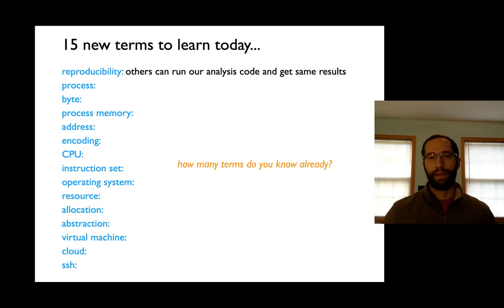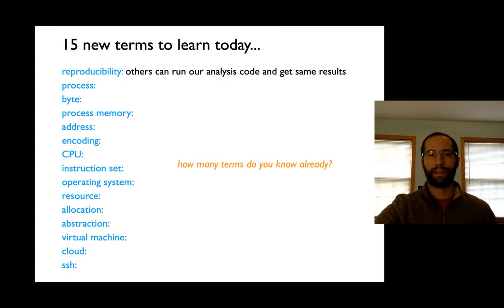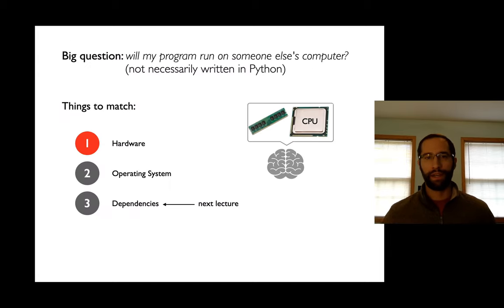This is one of our new goals — how can we write reproducible code? There are a lot of details about hardware, operating systems, and packages that we have to learn about. There are a bunch of new terms we're going to be thinking about today. I want you to pause the video and write down which of these terms you already think you know. A key to learning is to cleanly divide between what you already know and what you still need to learn.